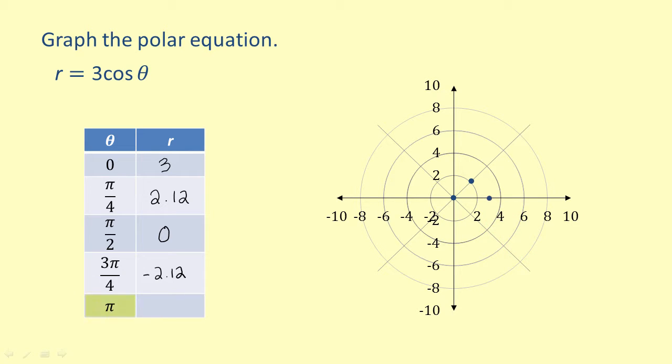Now we'll evaluate r when theta equals pi. The cosine at pi equals negative one, meaning that three times the cosine of pi will give us negative three. However, like we said previously, since the value of r is negative, that means we need to plot the point on the opposite side of the pole on the polar axis. Notice that we already have a point there. This set of points will continue to repeat, meaning we have the graph of a circle.